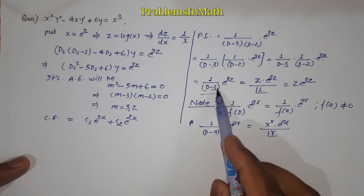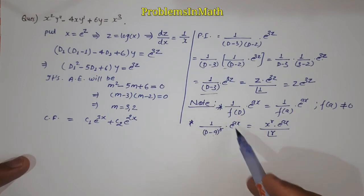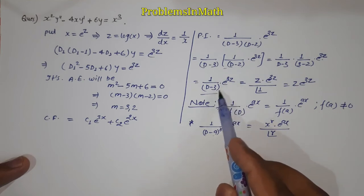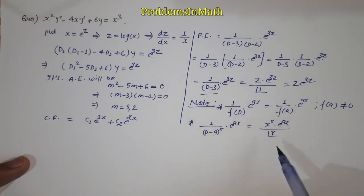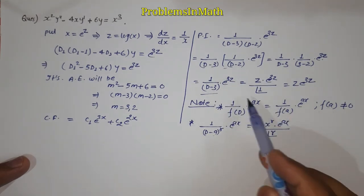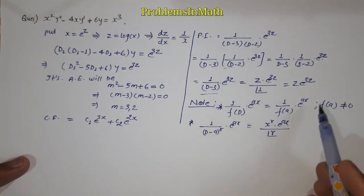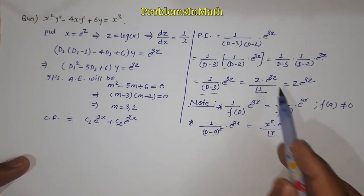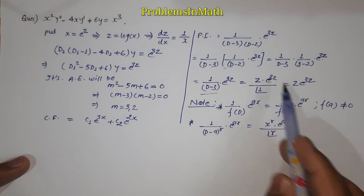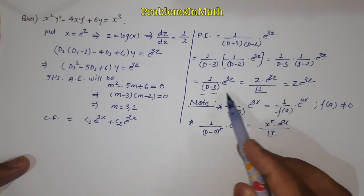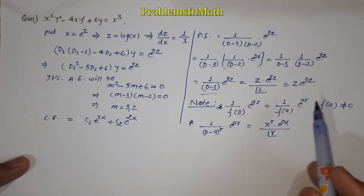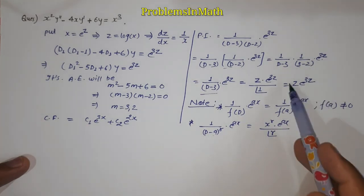Now using the second formula, (D minus a) to power r with r value equal to 1, e to power ax with a equal to 3. So z to the power r will be z to power 1 times e to power 3z upon factorial 1. So hope you have understood how we got these two steps.